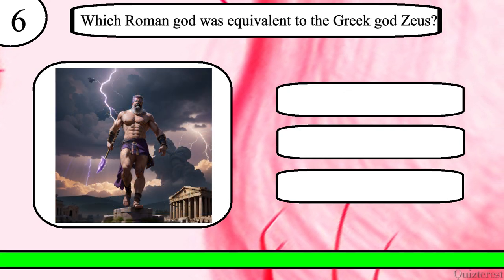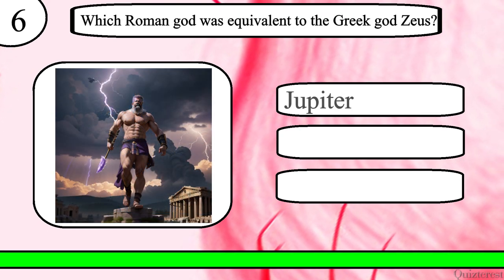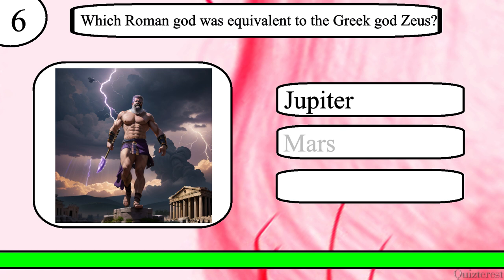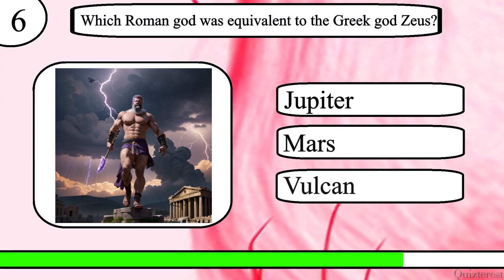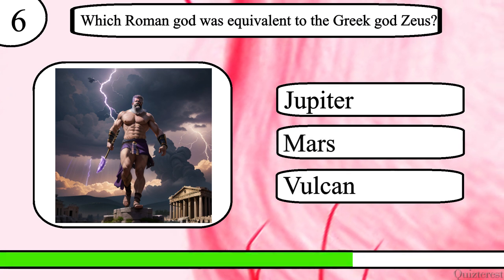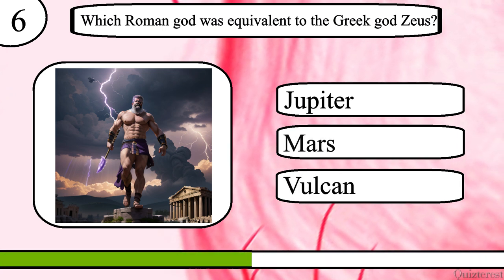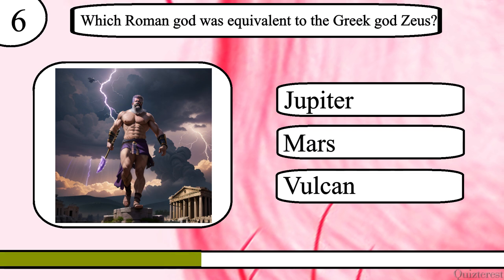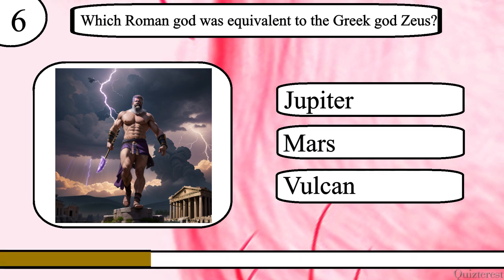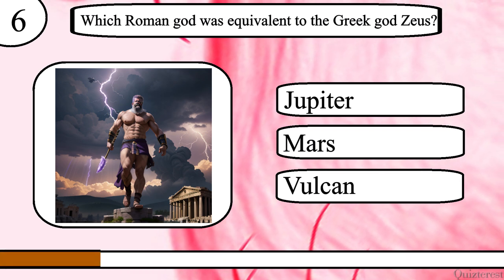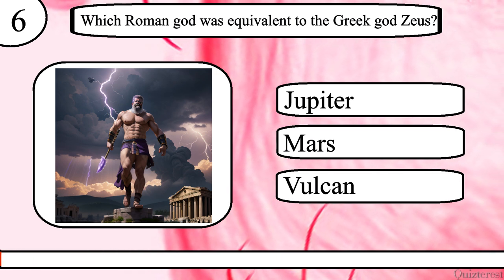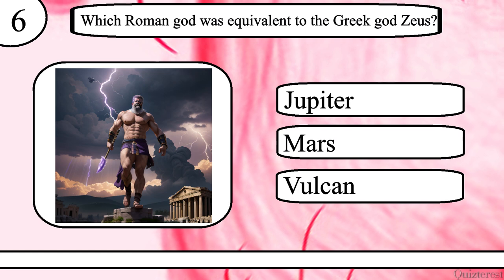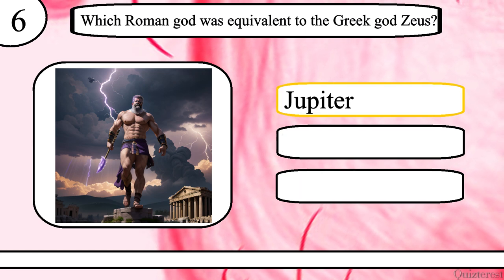Question 6. Which Roman god was equivalent to the Greek god Zeus? Jupiter, Mars or Vulcan? The correct answer is Jupiter.